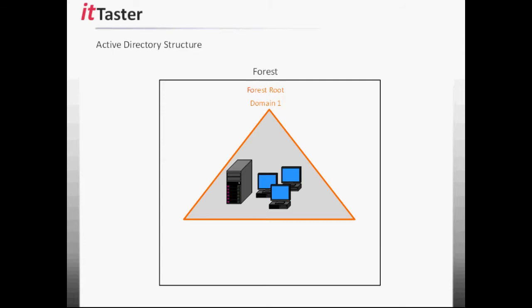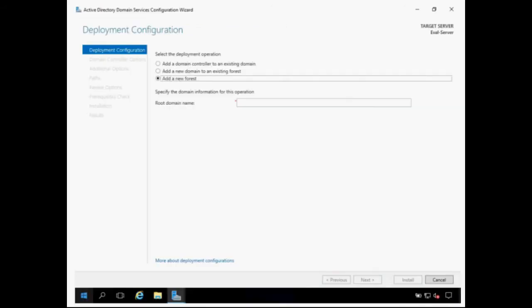When Active Directory is installed for the very first time, the first domain created within the forest is known as the forest root domain, and this must be given a fully qualified DNS domain name, which will also be the name of the forest. So when we install and configure Active Directory domain services for the first time, it's important to carefully consider what domain name to use and refer to best practice.